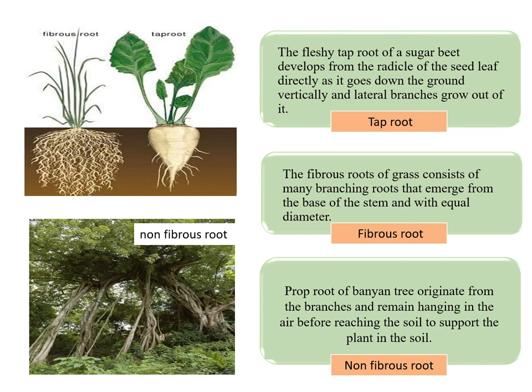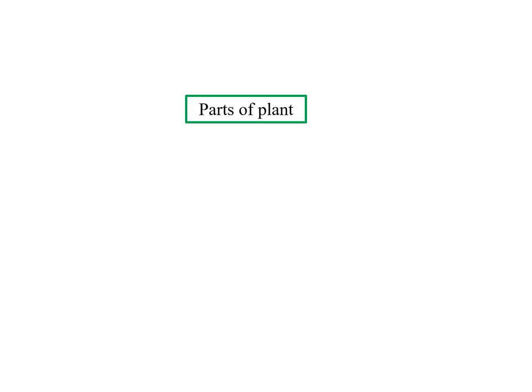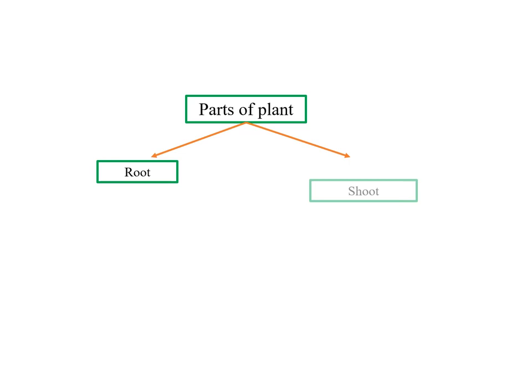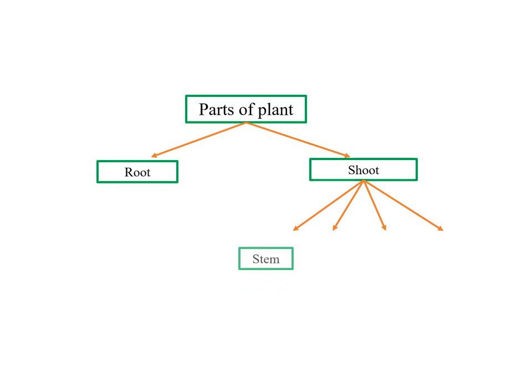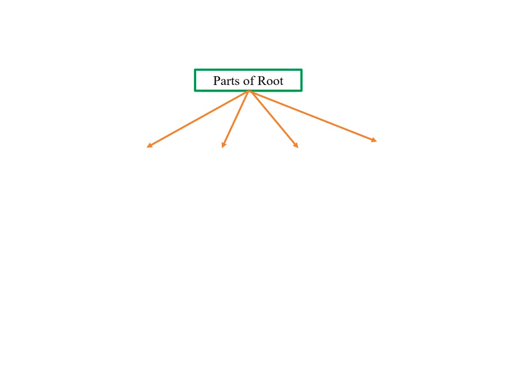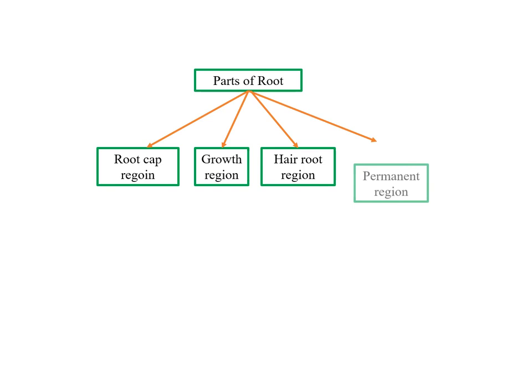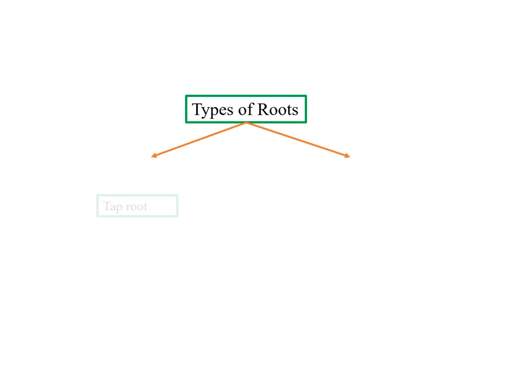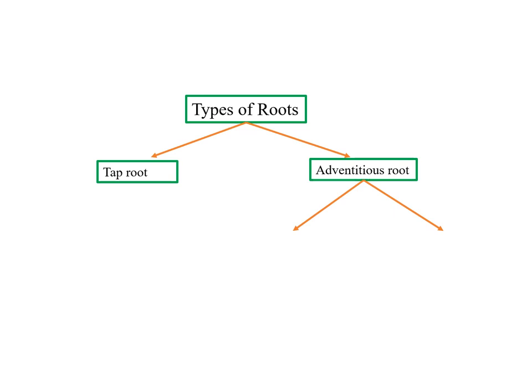That's the end of today's lesson. Let's take a quick recap. The plants have mainly two parts: root and shoot. Shoot can be divided into four parts: stem, leaf, flower and fruit. The roots can be classified into four regions: root cap region, growth region, root hair region and permanent region. The roots are mainly classified into two groups: tap root and adventitious root. Adventitious roots can be classified into two groups: fibrous root and non-fibrous root.